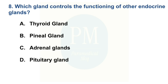Which gland controls the functioning of other endocrine glands? Option A: Thyroid gland. Option B: Pineal gland. Option C: Adrenal glands. Option D: Pituitary gland. The correct option is Option D — Pituitary gland.